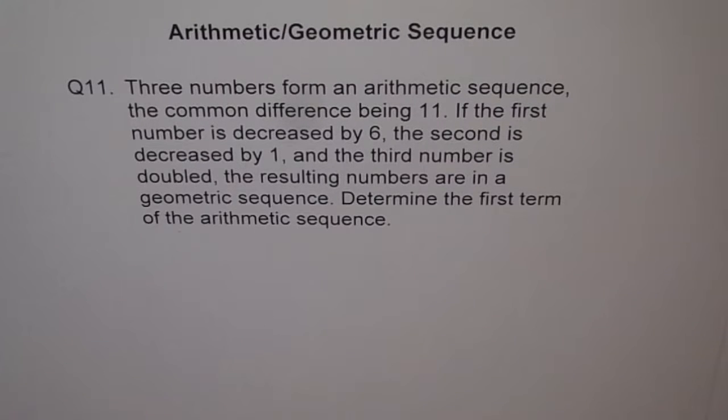Here we have another question where we will use both arithmetic and geometric sequences. Question 11. Three numbers form an arithmetic sequence, the common difference being 11. If the first number is decreased by 6, the second is decreased by 1, and the third number is doubled, the resulting numbers are in a geometric sequence. Determine the first term of the arithmetic sequence.